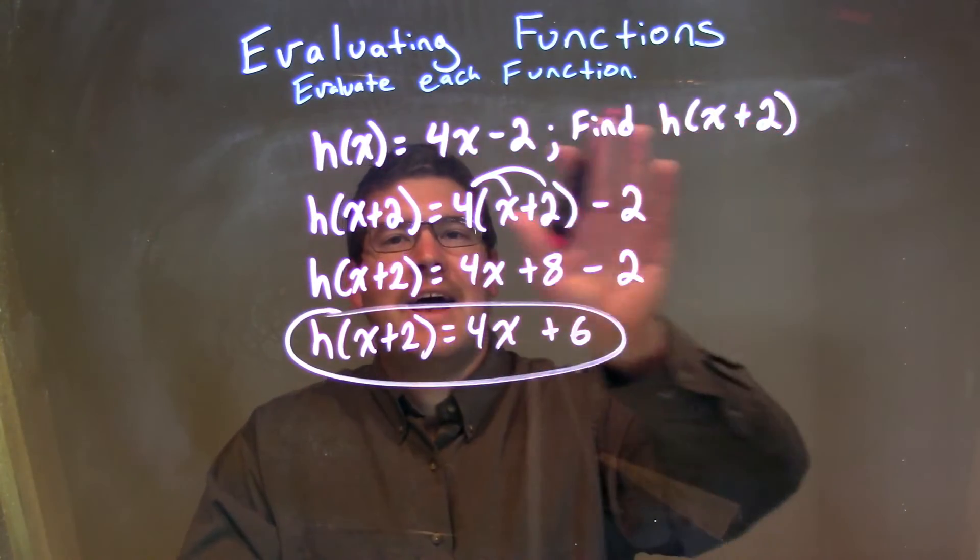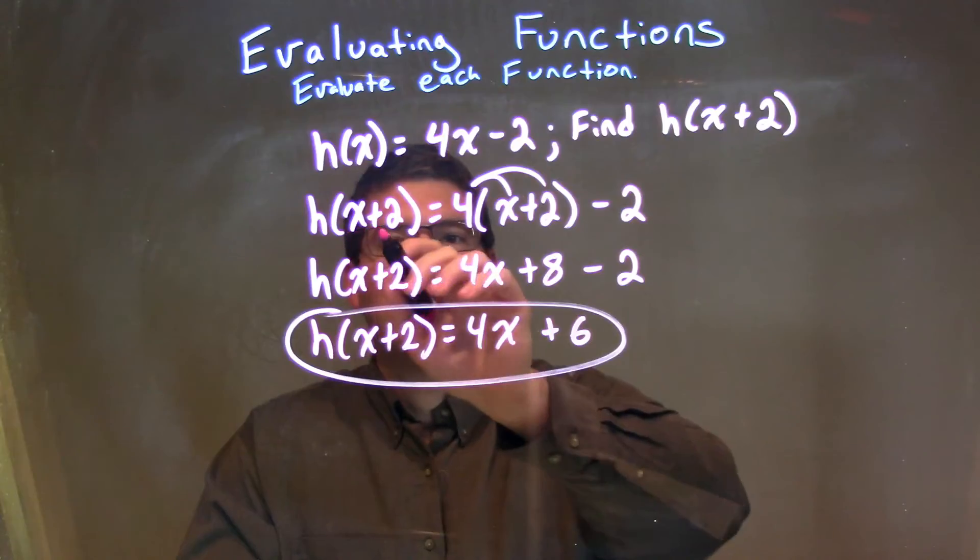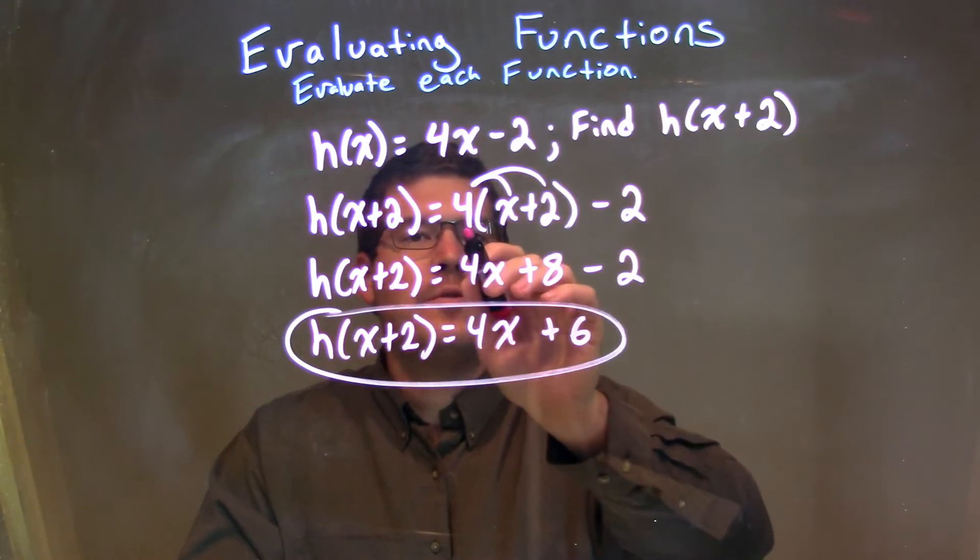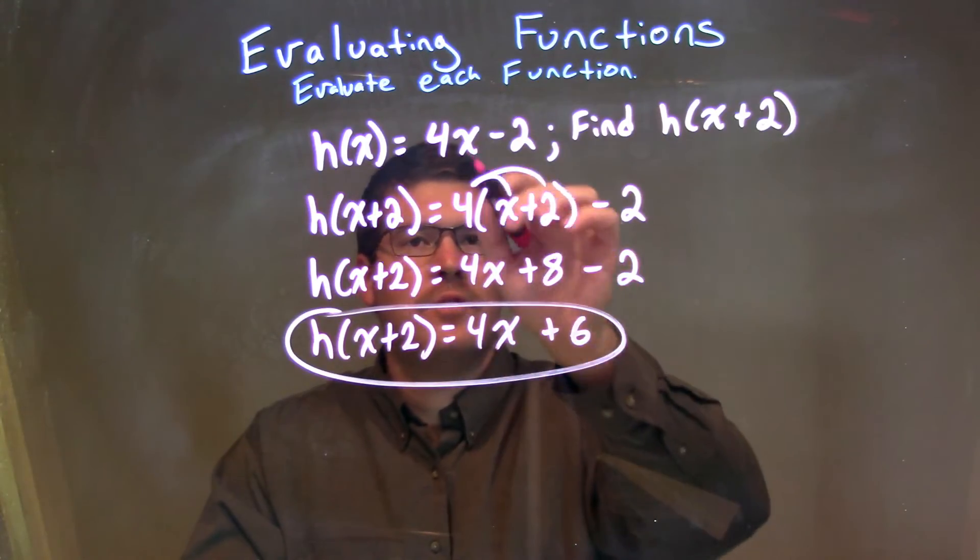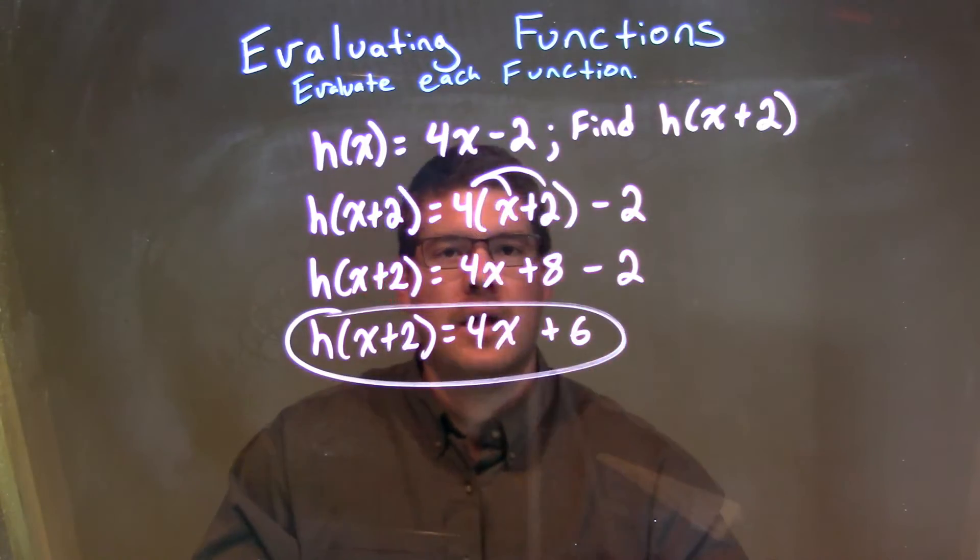Every single time we see an x, we plug in an x plus 2. So, we have h of x plus 2 right here is equal to 4 times x plus 2, substituting in for that x right there, and then a minus 2 on the outside.